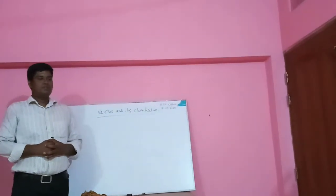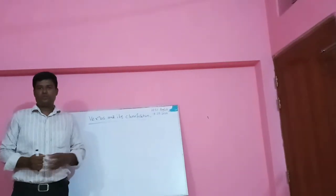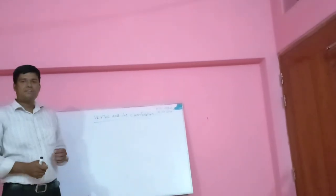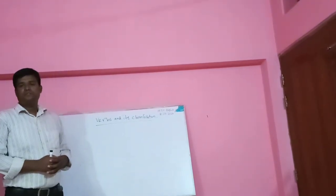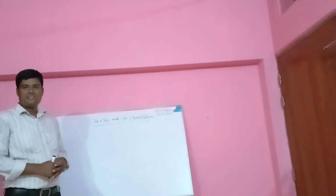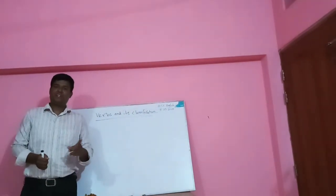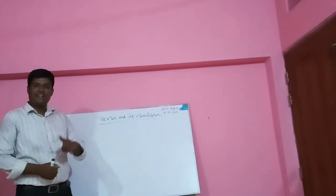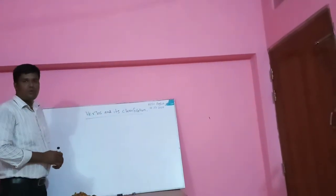What is a verb? A verb is a word or a group of words that shows what somebody or something does. In short, we can say that a verb indicates an action, or an event, or a state. Look at the following examples.